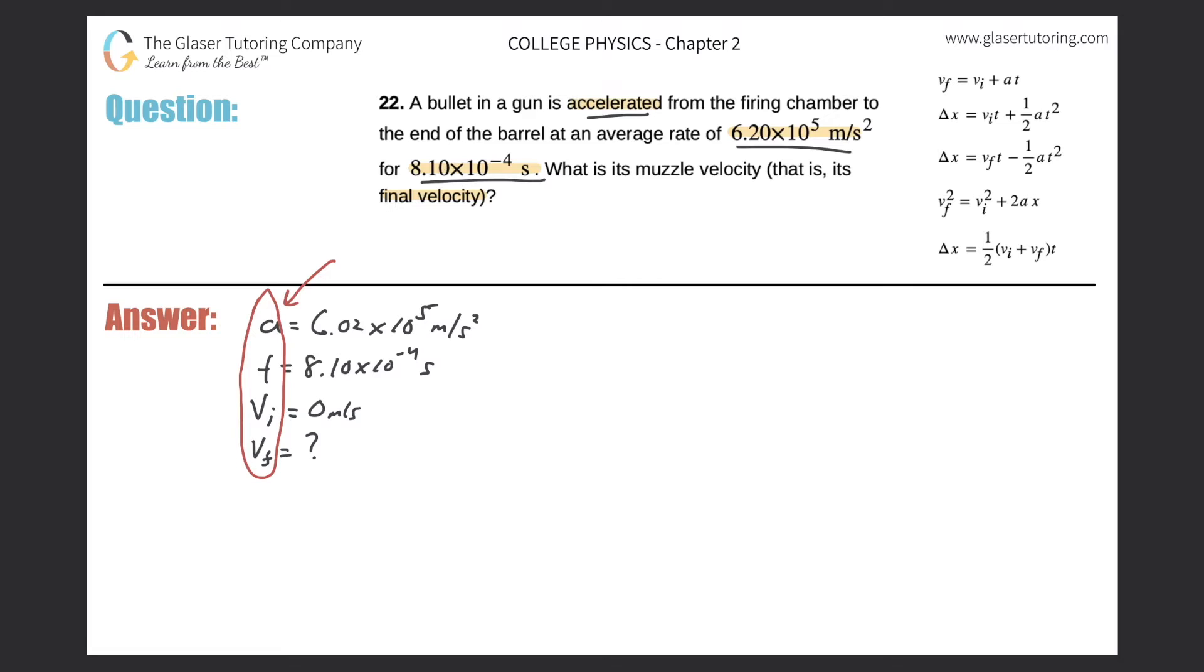So we have final velocity, initial velocity, acceleration, and time. And here it is right at the top. So that's the one we're going to use. So let's write it down. Final velocity is equal to the initial velocity plus the acceleration multiplied by time. So if I know three out of these four variables, that means I can solve for that fourth one that I don't know.